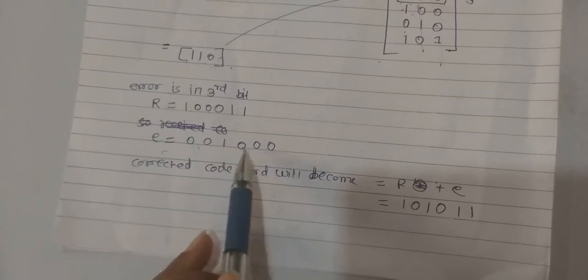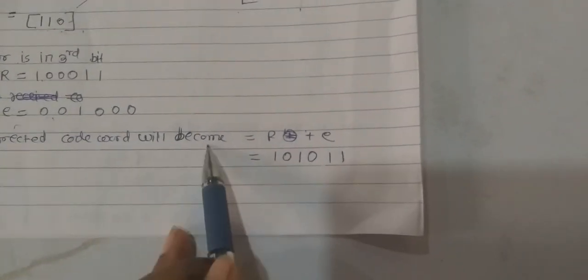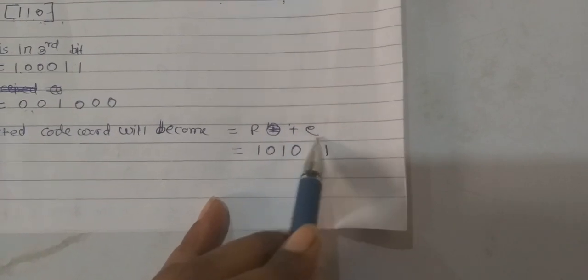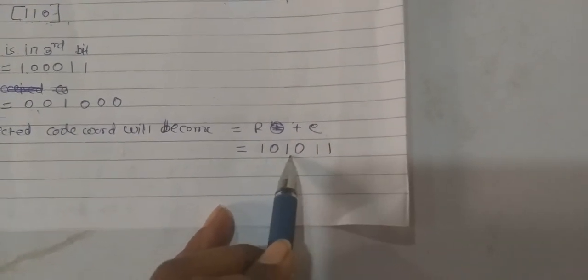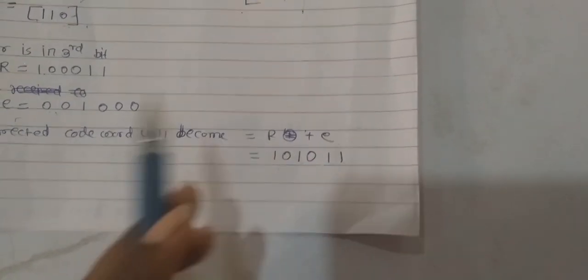Error is 0, 0, 1, 0, 0. Corrected code word will become R plus E. You will get 1, 0, 1, 0, 1, 1. Thank you.